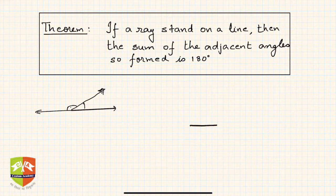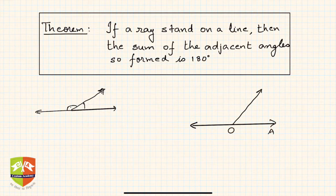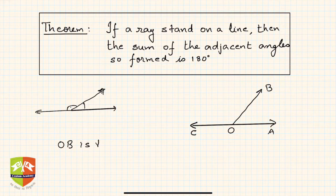For example, let me draw a line first. So let's say this is a line and a ray stands on this line. This point is O, this is A, this is B, and this is C. So OB is the ray.